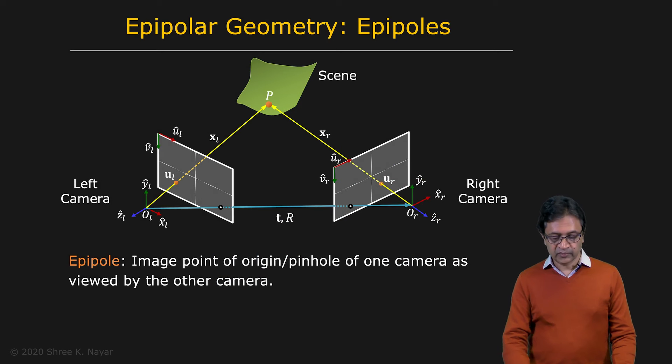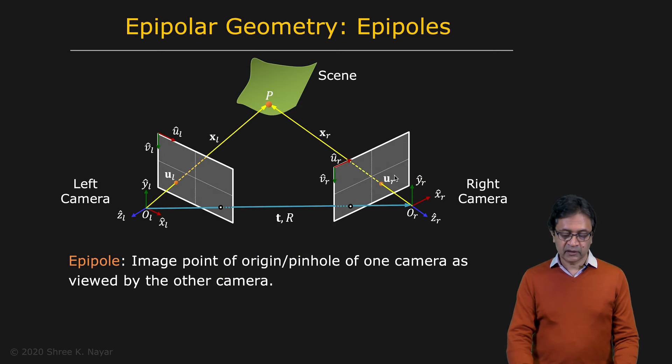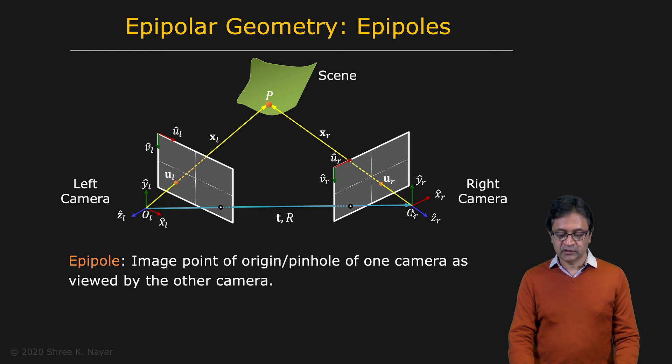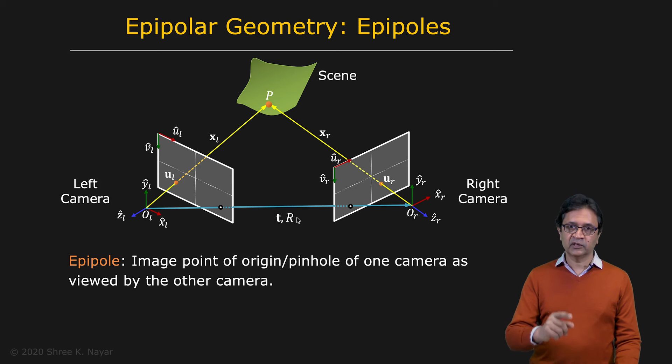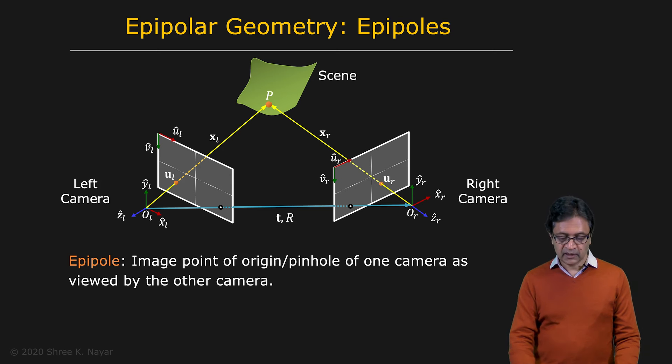Our goal is to find the relative position and orientation of one camera with respect to the other — that is the process of calibrating an uncalibrated stereo system. This relative position and orientation between the two cameras is completely described by the epipolar geometry of the stereo system. The left camera has its own 3D coordinate frame at OL, the right camera at OR. The translation and rotation of one frame with respect to the other, given by T and R, is what we are trying to compute.